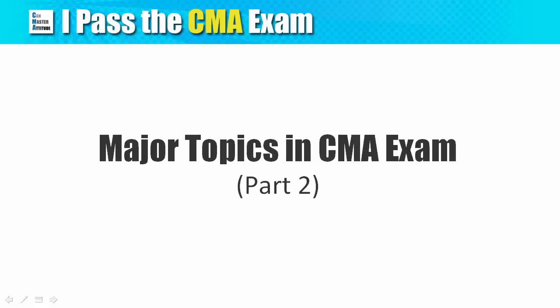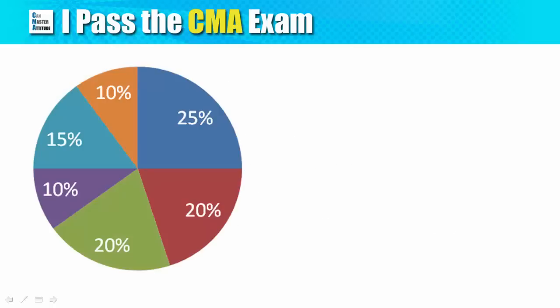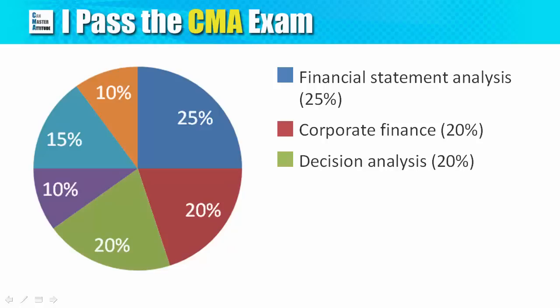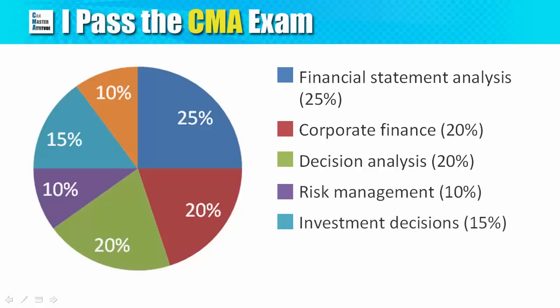Part 2 is all about financial analysis and decision making. There are six sections: Financial Statement Analysis representing 25%, Corporate Finance at 20%, Decision Analysis at 20%, Risk Management at 10%, Investment Decisions at 15%, and Professional Ethics at 10%.